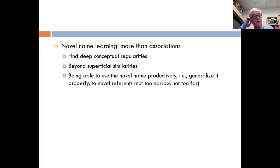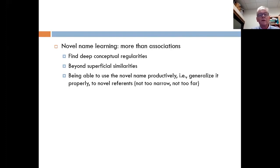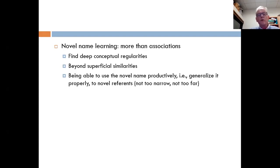Novel name learning is more than association. One of the reasons why it's more is that children have to find deep conceptual regularities. We have to go sometimes beyond superficial similarities, which might be misleading. And even though we might have understood the meaning of a word, children also have to use it productively, which means generalize it properly to novel references.